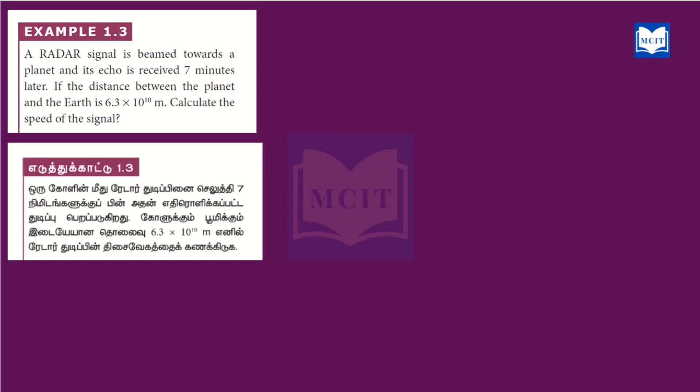Tamil question explanation: A radar signal is sent out — that is a radio wave — and it is received back. The distance between the planet and Earth is 6.3 into 10 power 10 meters. Using the radar method, we can find the speed of the radar signal.